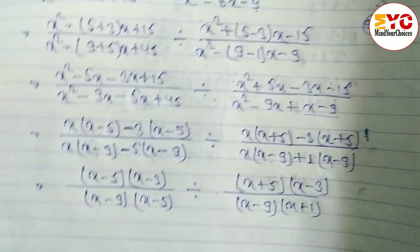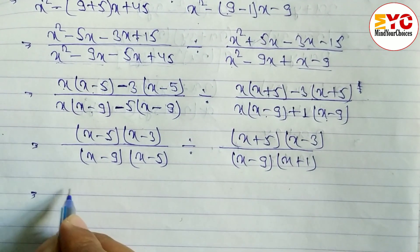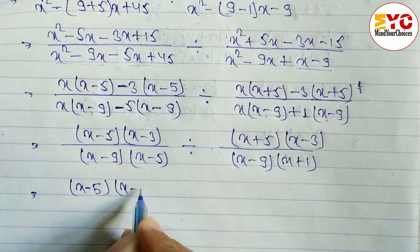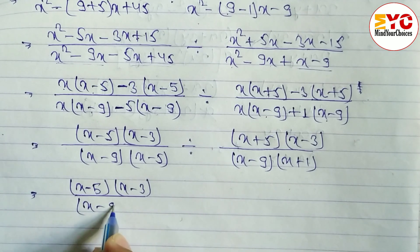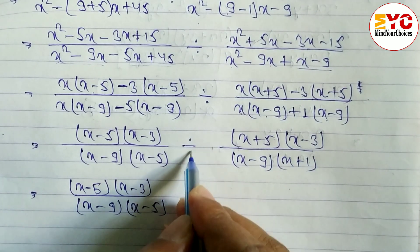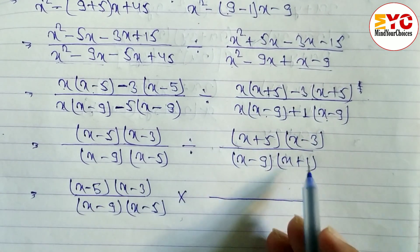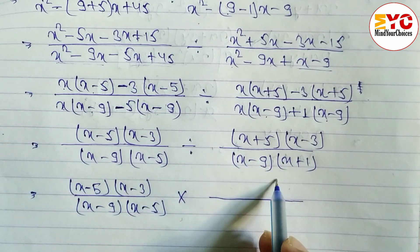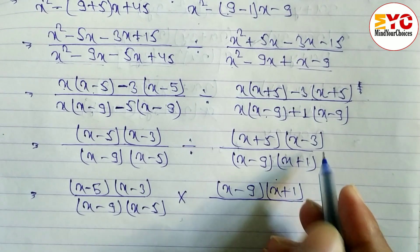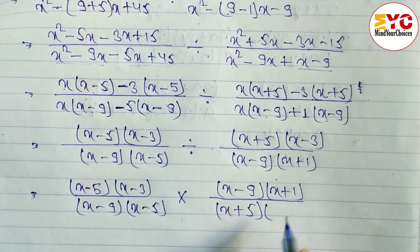Now in place of divide we write multiplication: (x − 5)(x − 3) divided by (x − 9)(x − 5), and when we change divide into multiplication we take the reciprocal — the denominator goes to the numerator. So we write (x − 9)(x + 1) in the numerator and (x + 5)(x − 3) in the denominator.